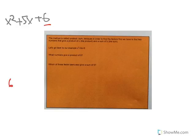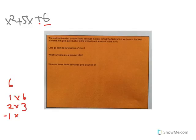The first number we're always going to look at is this one here — the constant term. For 6, there are a few possible ways to make it: 1 times 6, 2 times 3, negative 1 times negative 6, or negative 2 times negative 3. It's really important that you get the negatives down as well.